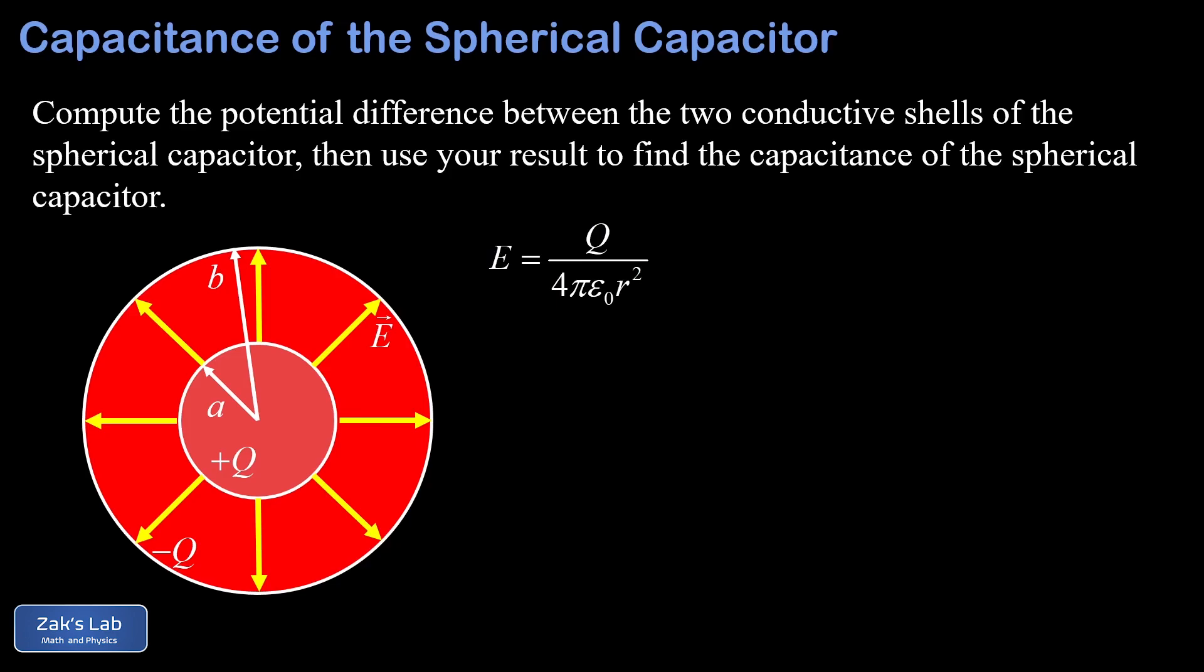So the main idea for finding capacitance is that we put charges of plus and minus Q on the two conductors, and then we use the definition of capacitance, and capacitance is Q over V, charge per volt. So if we place those charges of plus and minus Q on the two conductors, and then we find the potential difference between them, that's V, the capacitance drops out immediately by taking Q divided by V.